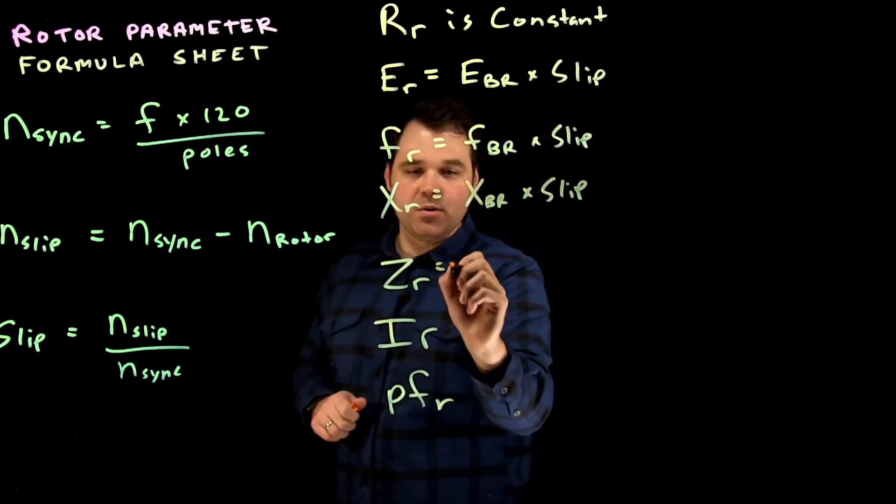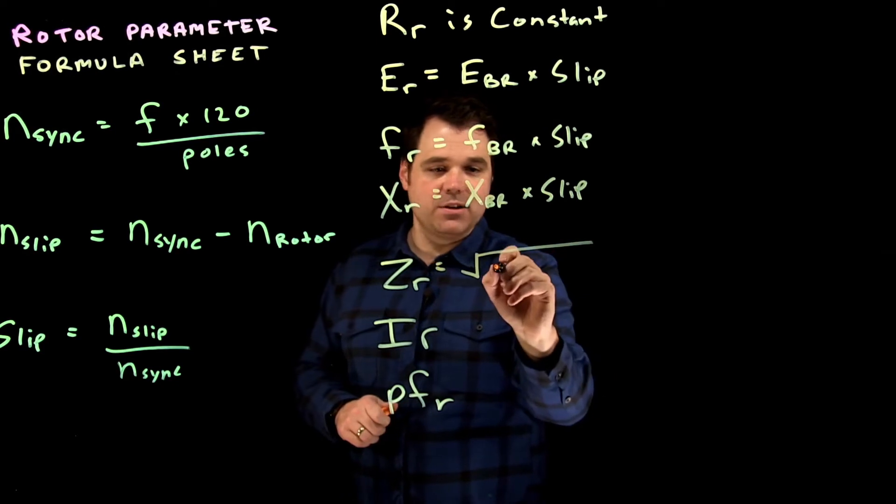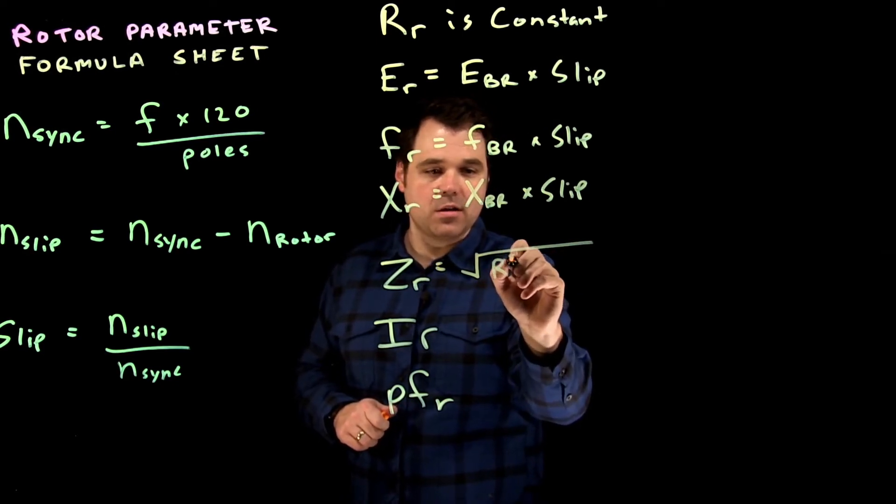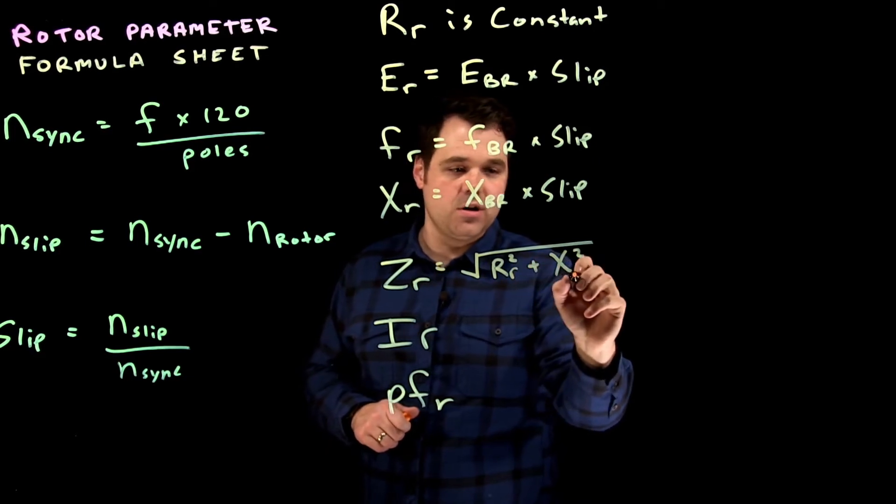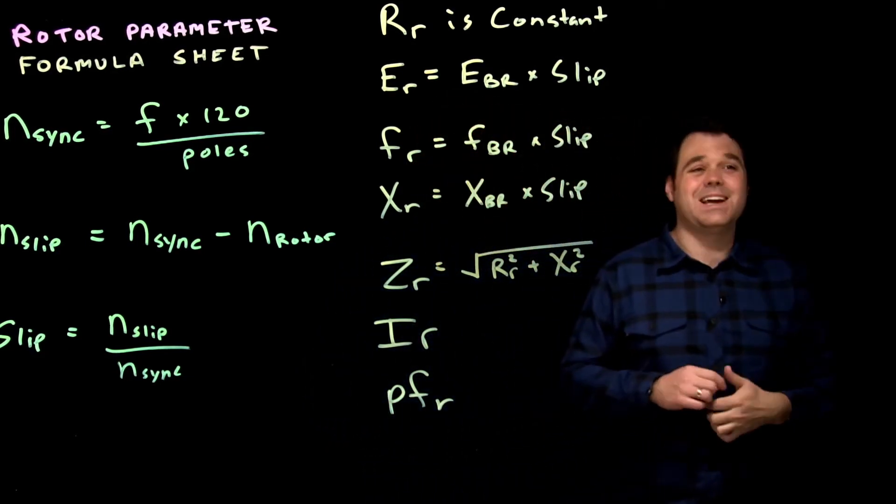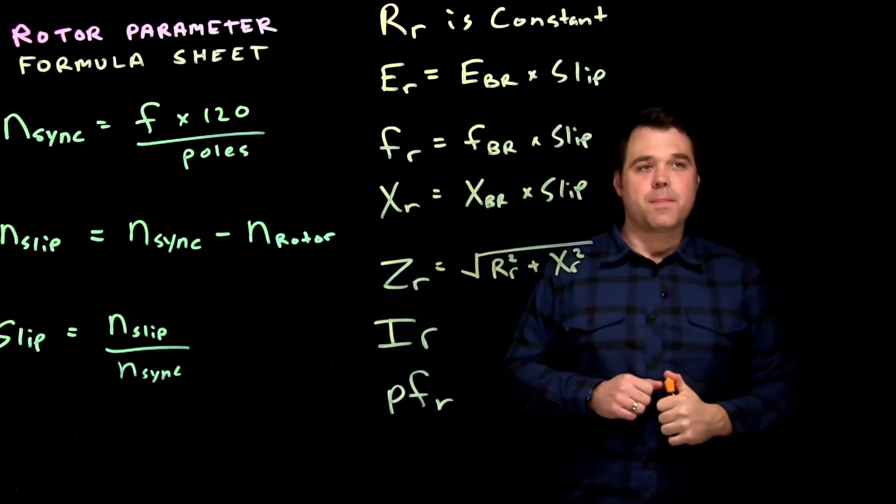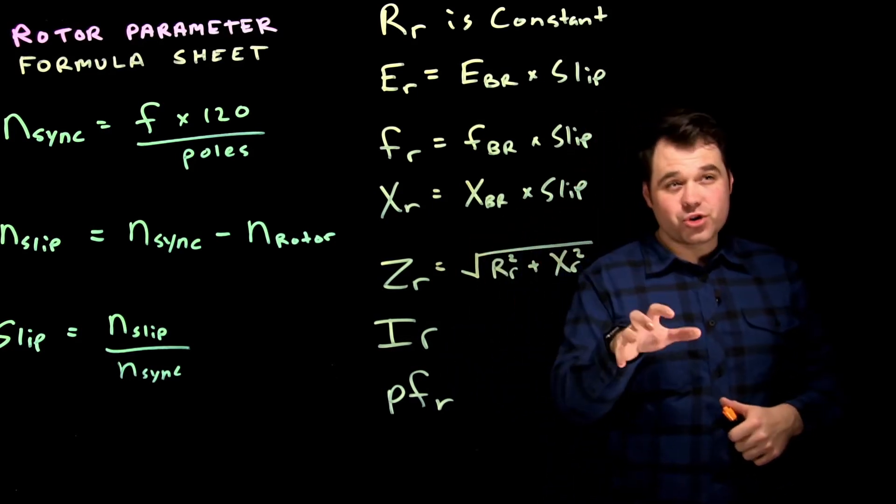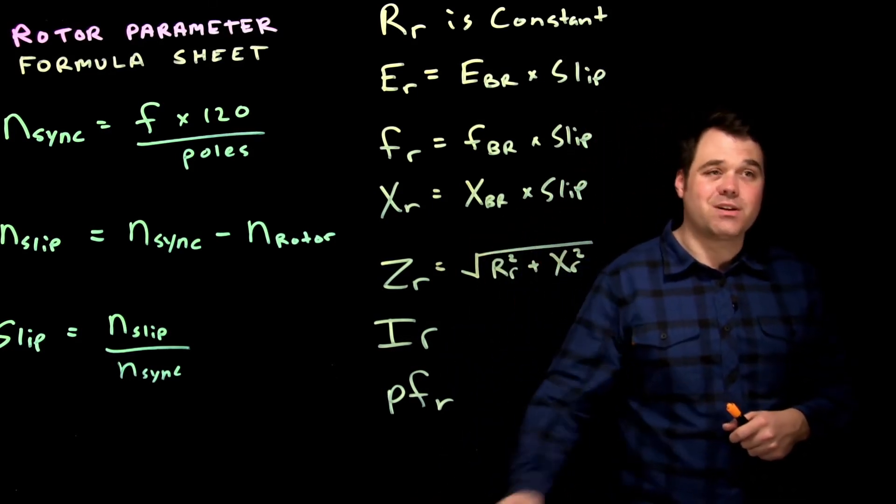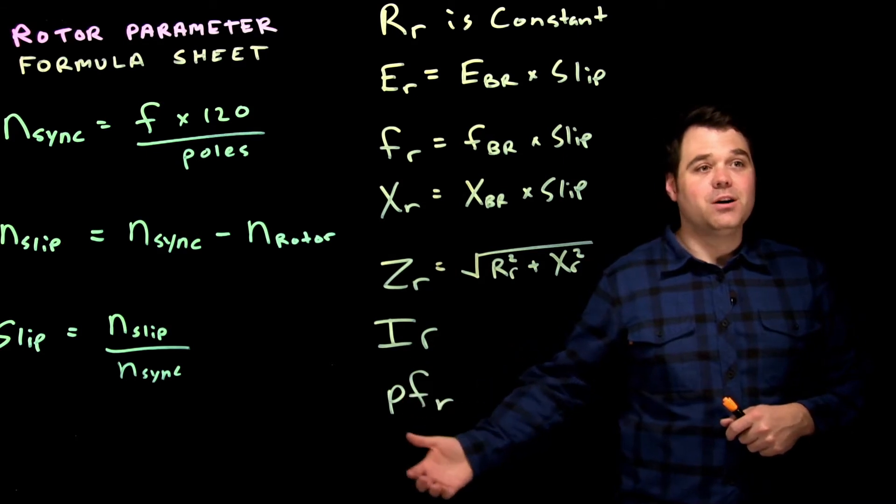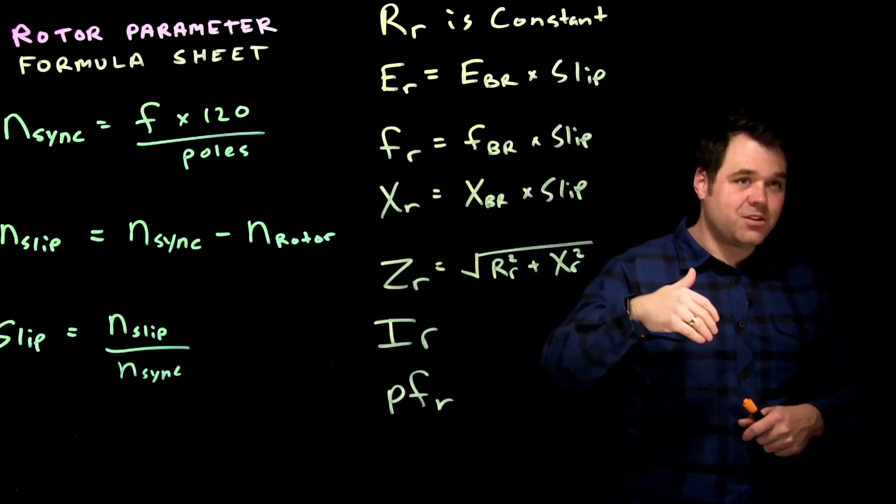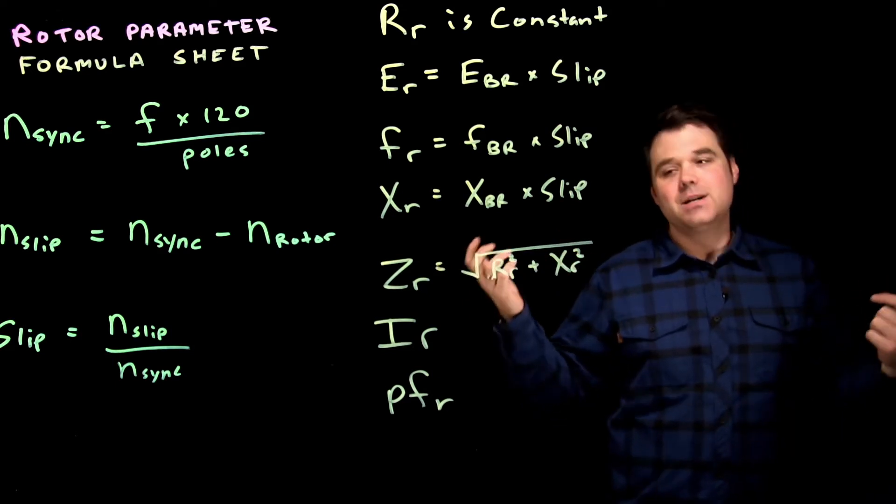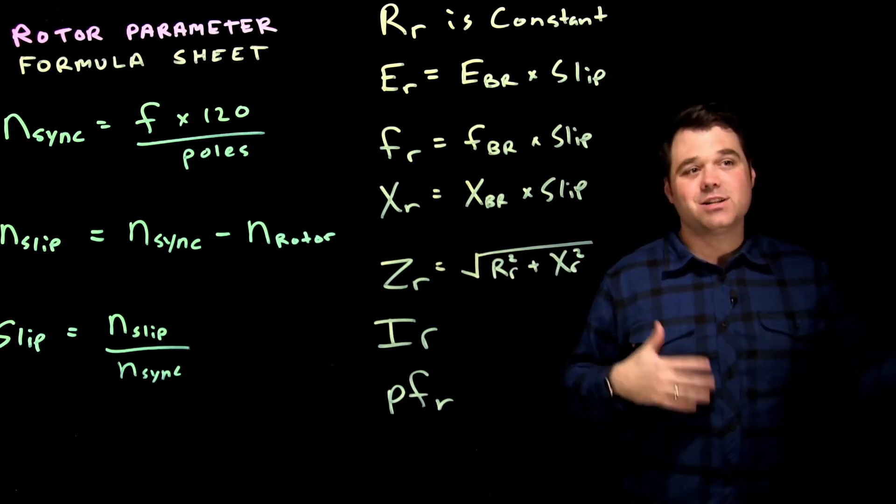Now the impedance of our rotor, we're just going to use Pythagorean's theorem: r squared plus x squared, although we're using r of the rotor and x of the rotor to get our impedance of the rotor. So again, this one is proportional but not directly, so it's not a straight line with slip, but it will decrease with slip. As slip decreases it'll decrease, as slip increases it'll increase, but it's not directly proportional. It's not a one for one.